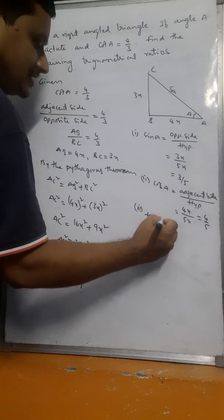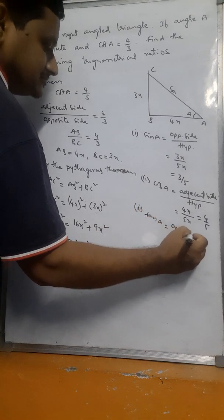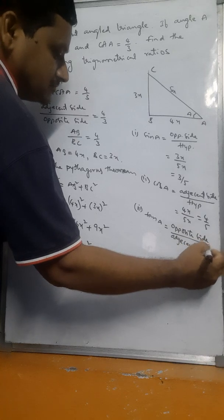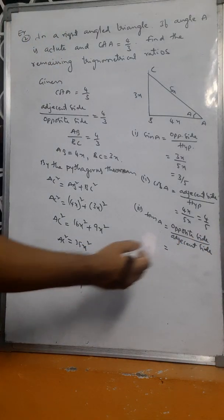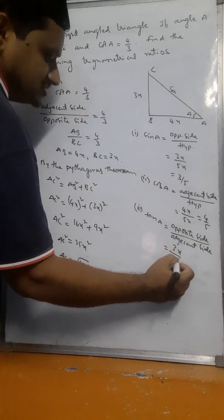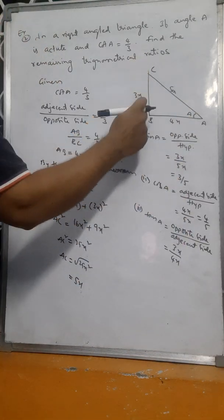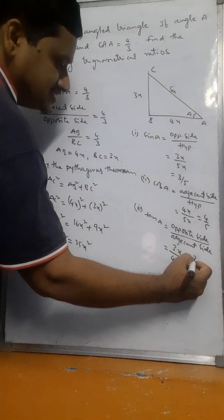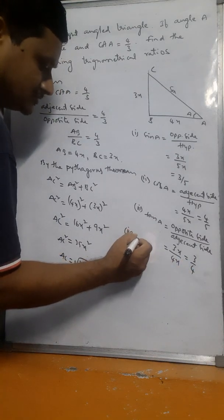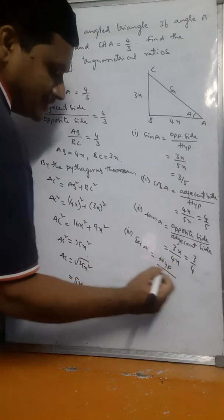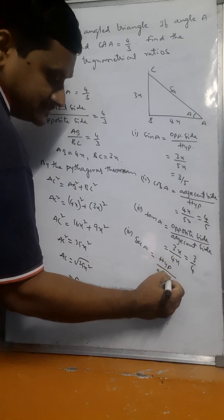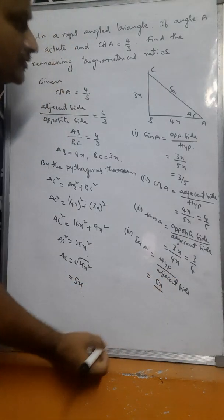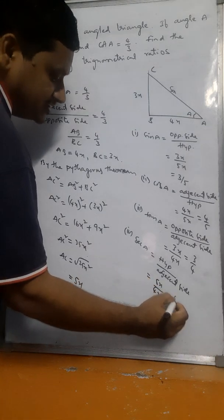Tan A means opposite side by adjacent side. Opposite side is BC equals 3x, adjacent side is AB equals 4x. So tan A equals 3x by 4x, which is 3 by 4. Sec A means hypotenuse by adjacent side, which is 5x by 4x, giving 5 by 4.